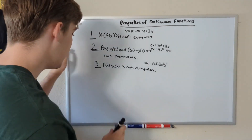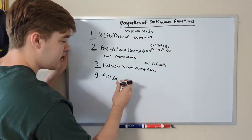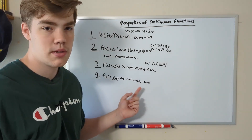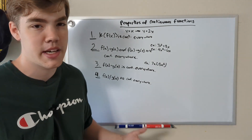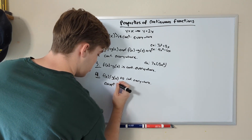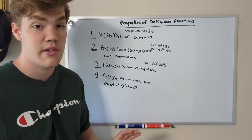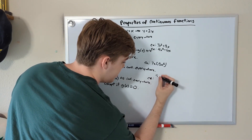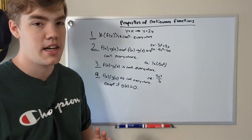Property number four is about division. f(x) divided by g(x) — two functions being divided by each other — are continuous everywhere, except we need one extra rule: we cannot have g(x) equal zero in the denominator. We cannot divide by zero. If g(x) equals zero, this function is no longer continuous. As an example, 8x³ divided by 7x is continuous everywhere.